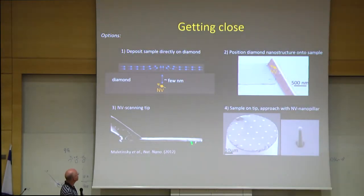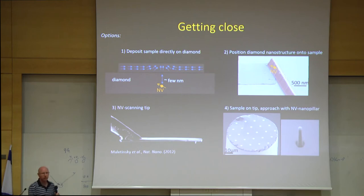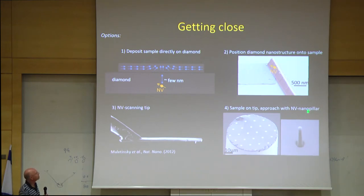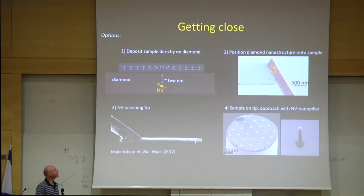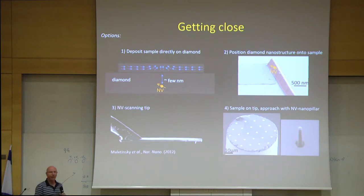There are many other experimental configurations. If you don't want to scan but want to learn about a property at one location, you can simply deposit the material on top of diamond and explore the centers. When you cannot deposit the material on diamond, you can bring the diamond to the material — nanobeams of diamond that we fabricate and transfer onto the surface, with one NV center along the beam. We're also developing a stationary diamond probe where you deposit material on a tip and image by moving the material relative to the sensor.